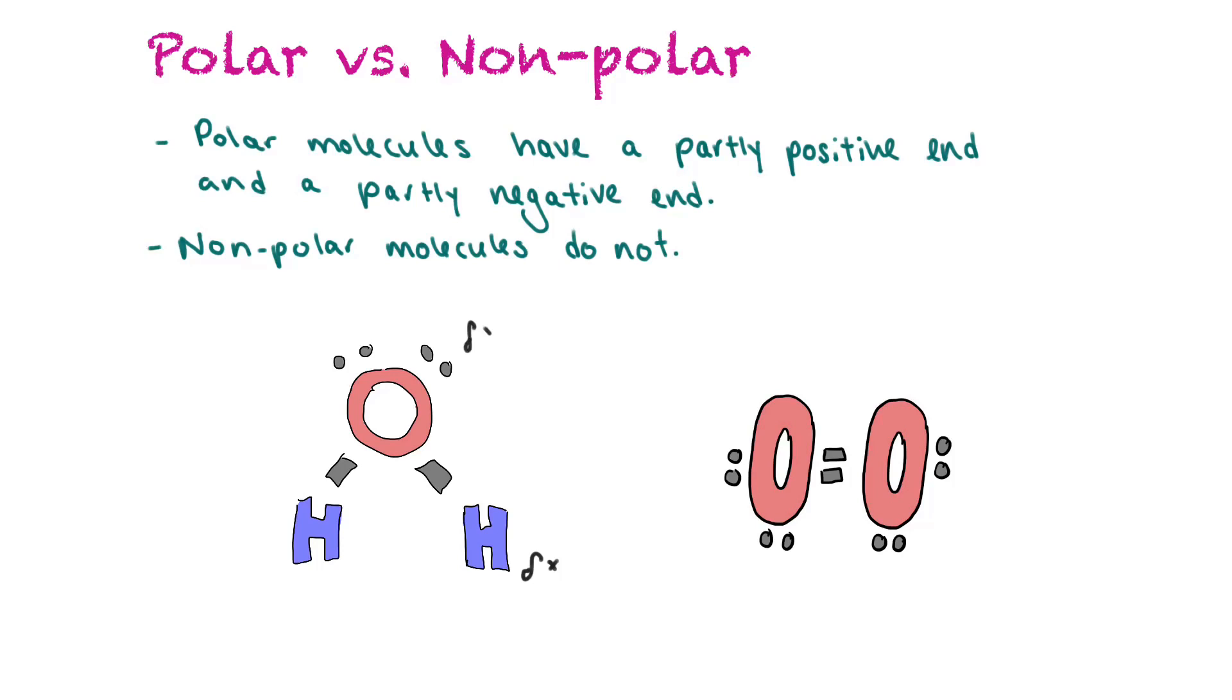Nonpolar molecules do not have that partly positive end and partly negative end. If you look at this molecule of oxygen, they're equal on both sides. So there's equal numbers of negative electrons on one side and equal numbers on the other. So this would be a nonpolar molecule.